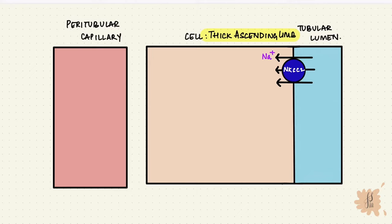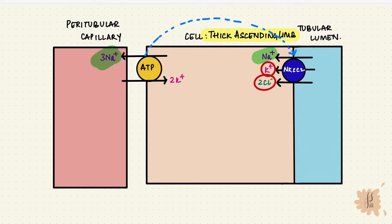Which brings one sodium, one potassium, and two chloride molecules into the cell. Where does it get its energy from? Similar to the PCT, the sodium-potassium ATPase on the basolateral membrane, which takes sodium out of the cell, creating a concentration gradient, which brings sodium in from the opposite side, and the energy generated brings potassium and two chloride along with it.